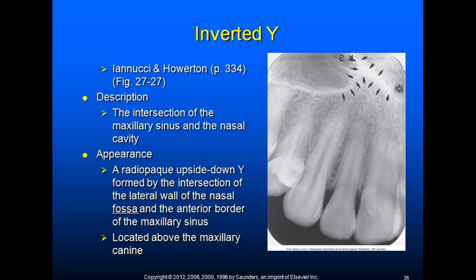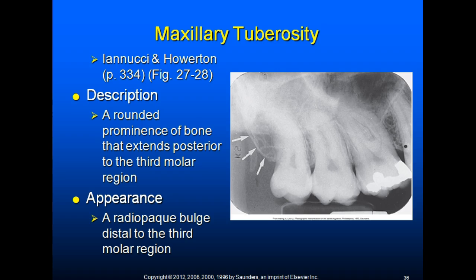Both the lateral wall of the nasal cavity and the anterior border of the maxillary sinus are composed of dense cortical bone. The maxillary tuberosity is a rounded prominence of bone that extends posterior to the third molar region and appears as a radiopaque bulge distal to the third molar. Blood vessels and nerves enter the maxilla in this region and supply the posterior teeth.